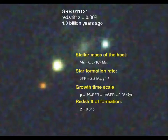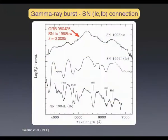If you assume that the star formation has been constant for its entire life, you build the stellar mass that you observe in about 2 gigayears, so the formation redshift would already be 0.8. Now, you are convinced that gamma-ray bursts are normally associated with supernova collapse, Type 1C.